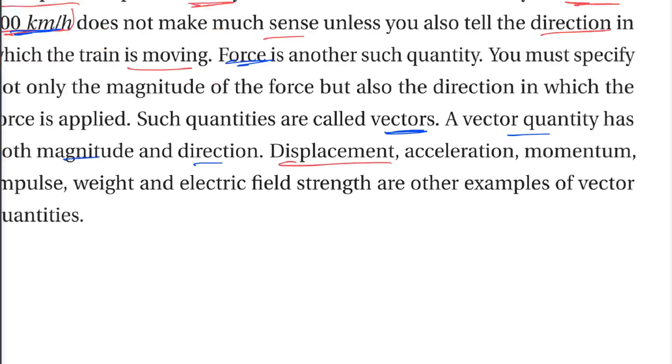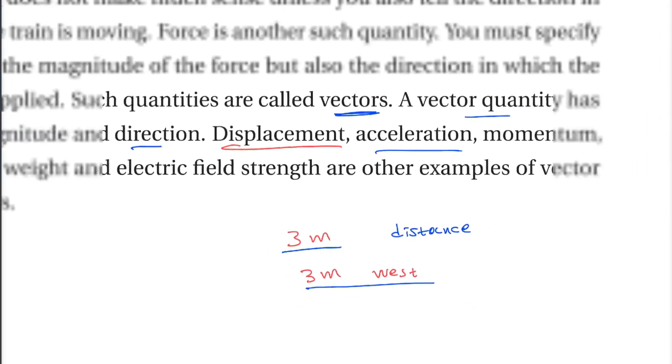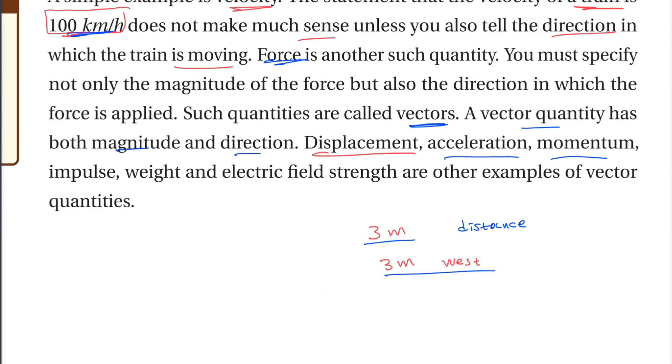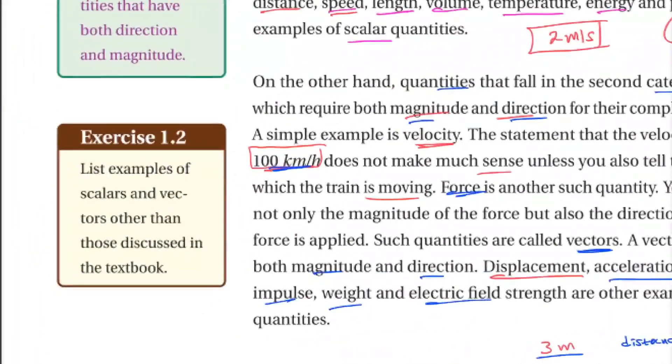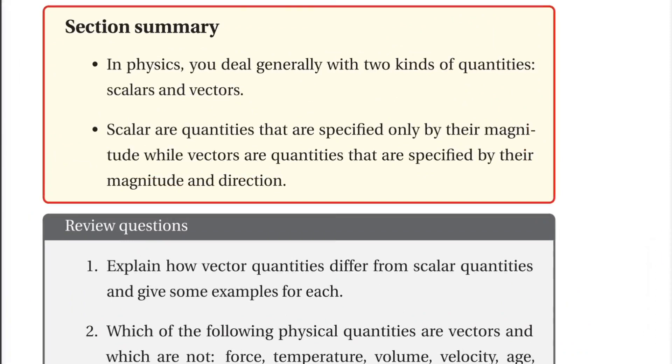Displacement: distance 3 meter, direction. Displacement has direction; distance doesn't. Acceleration, momentum, impulse, weight, electric field strength are vector quantities. The unit is not scalar. Vector quantity has magnitude and direction.